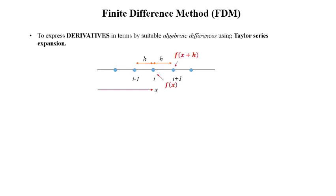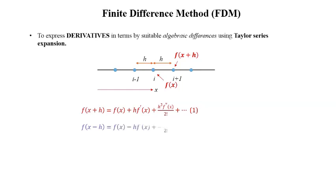We are interested in expressing f(x+h) in terms of f(x). Recalling the Taylor series expansion: f(x+h) = f(x) + h·f'(x) + h²/2! · f''(x) + higher order terms. Similarly, f(x−h) = f(x) − h·f'(x) + h²/2! · f''(x) + higher order terms.